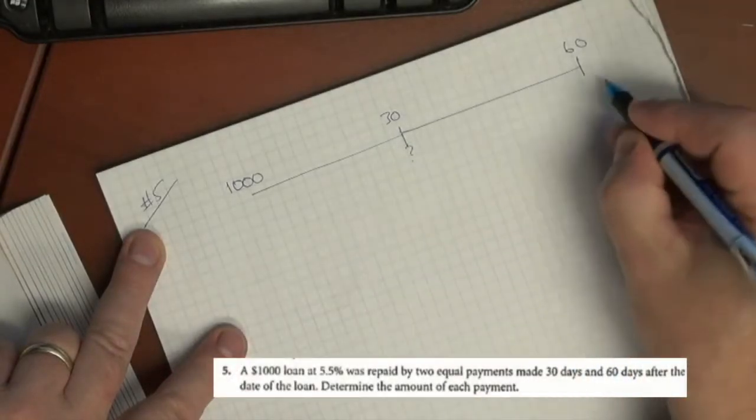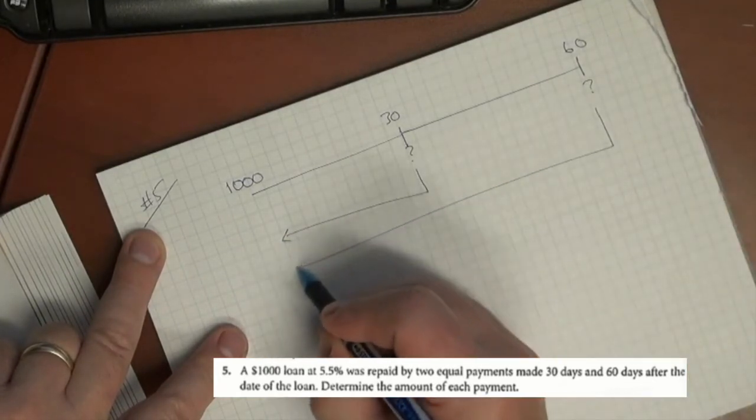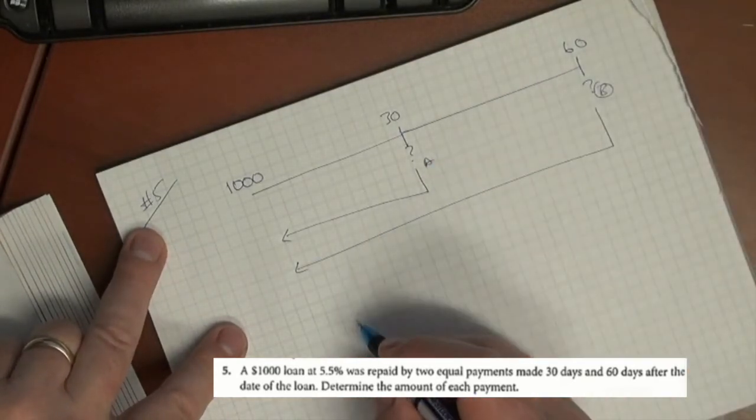The second type of scenario set up whenever we have loans is calculating equal payments. We'll do number five - it's a simple example that illustrates it very well. It says that a loan of $1000 at 5.5% is repaid in two equal payments made at 30 days and 60 days after the date of the loan. Determine the amount of each payment. So we have a $1000 loan with a payment made in 30 days and a payment made in 60 days. I'll call this one A and this one B.